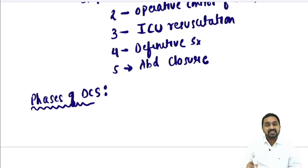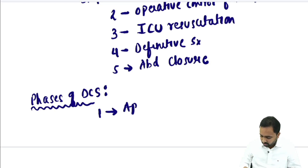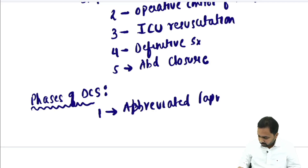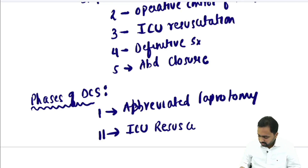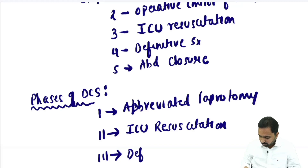Atlas has also mentioned phases of DCS. Phase 1 is the phase of abbreviated laparotomy. Phase 2 is the phase of ICU resuscitation. Phase 3 is definitive surgery.